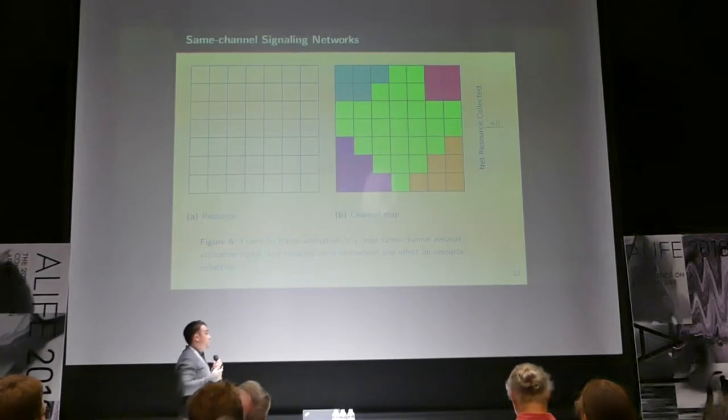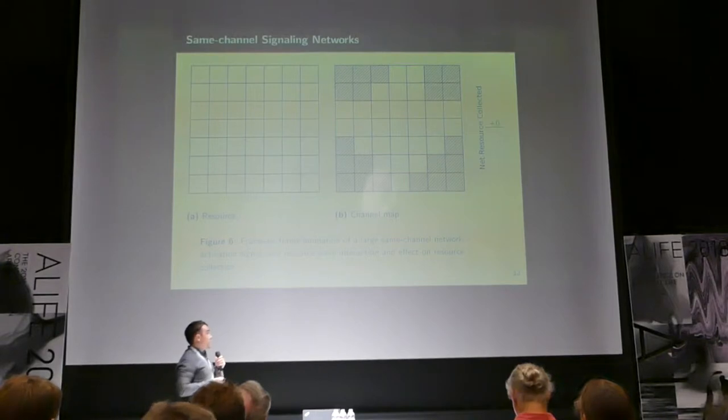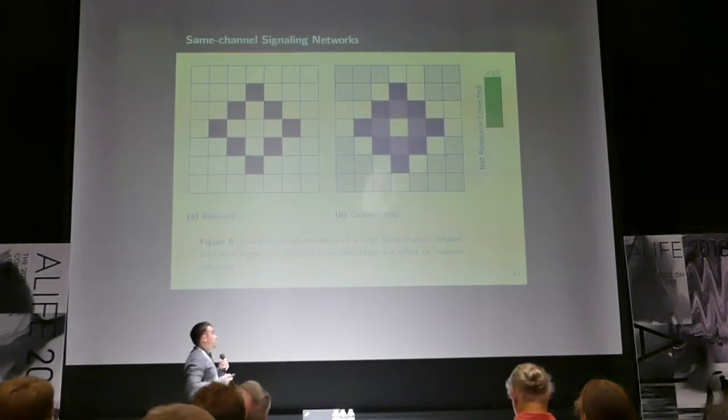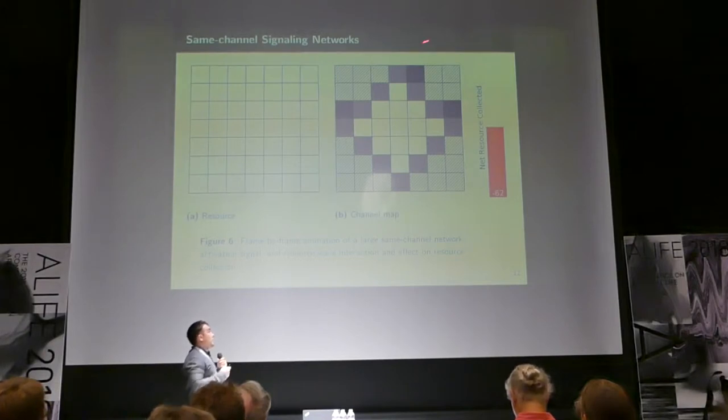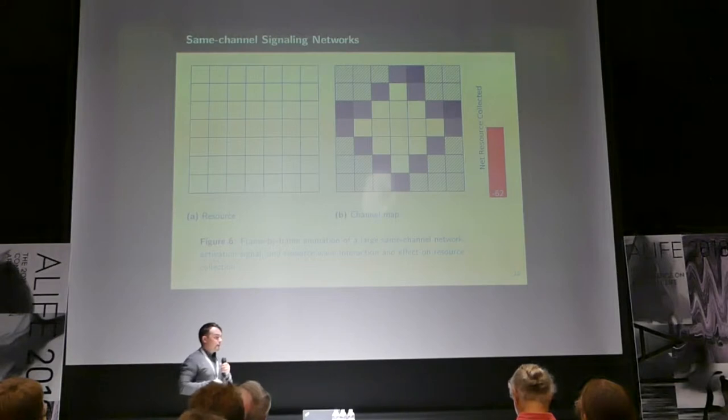Okay, let's move on to an even bigger same channel signaling network. Let's see what happens. So, we're going to trace it out, and you can see the activation is propagating beyond the extent of the resource. And so, we're collecting a bunch of net negative resource. If you have a same channel signaling network and it gets too big, that can be really bad.